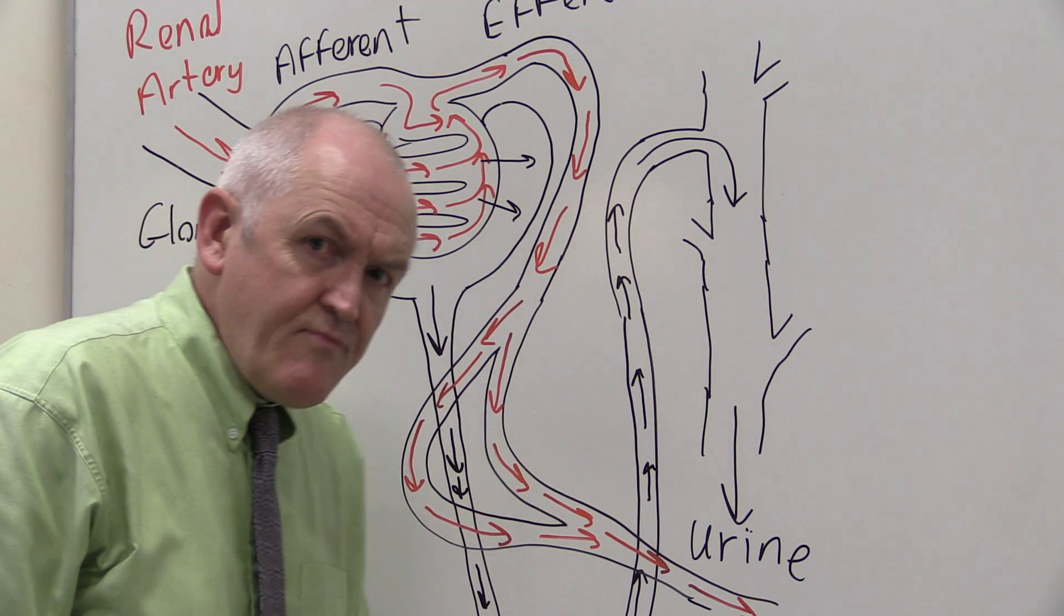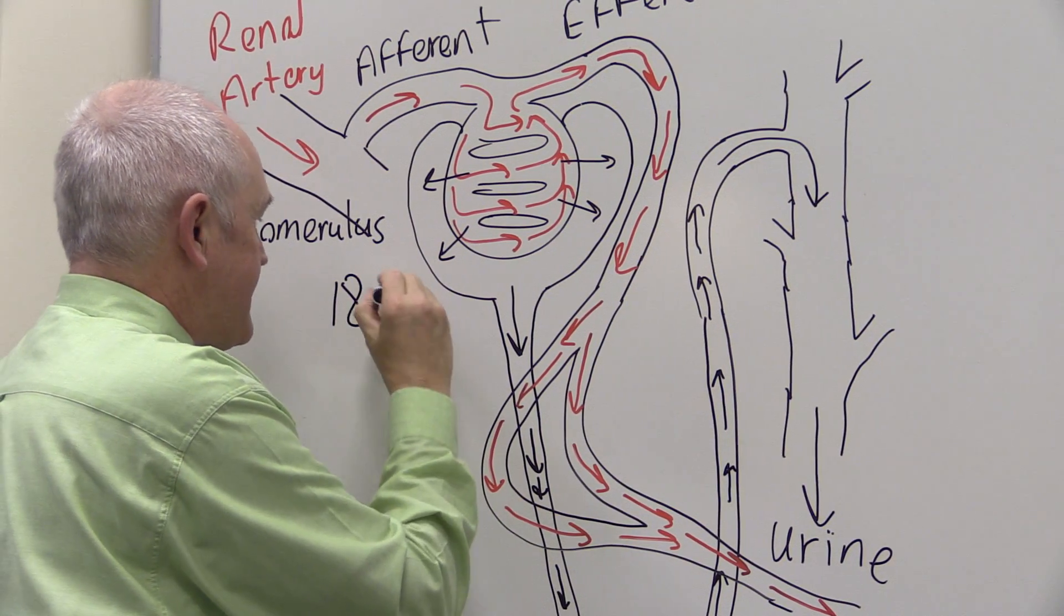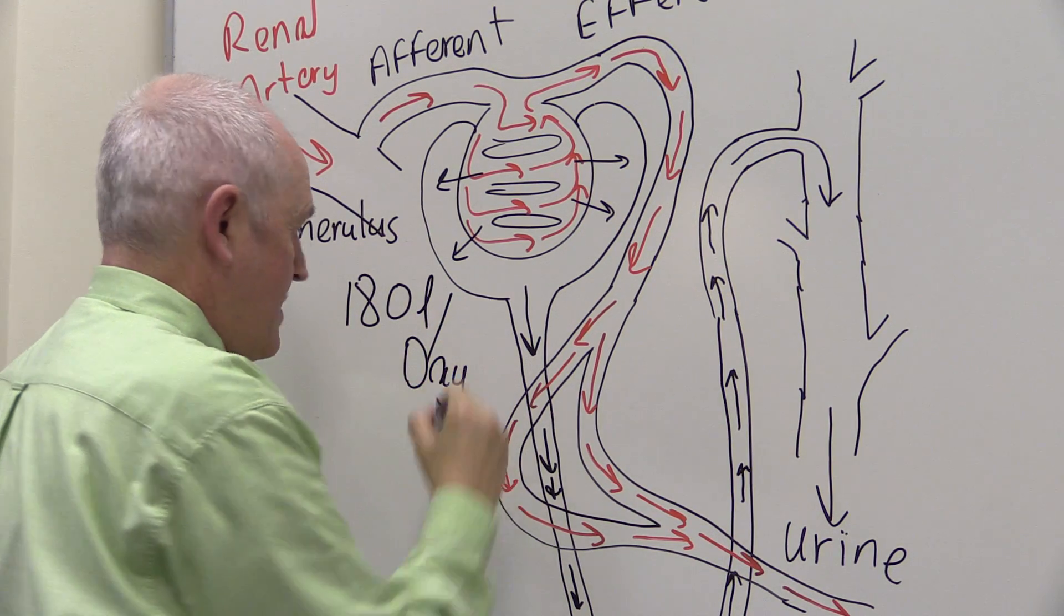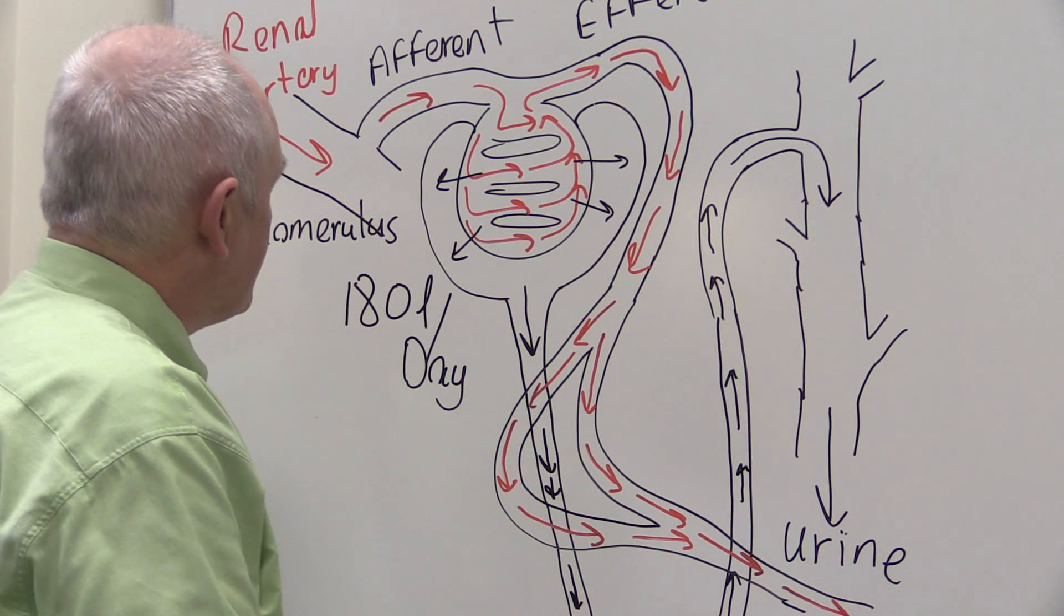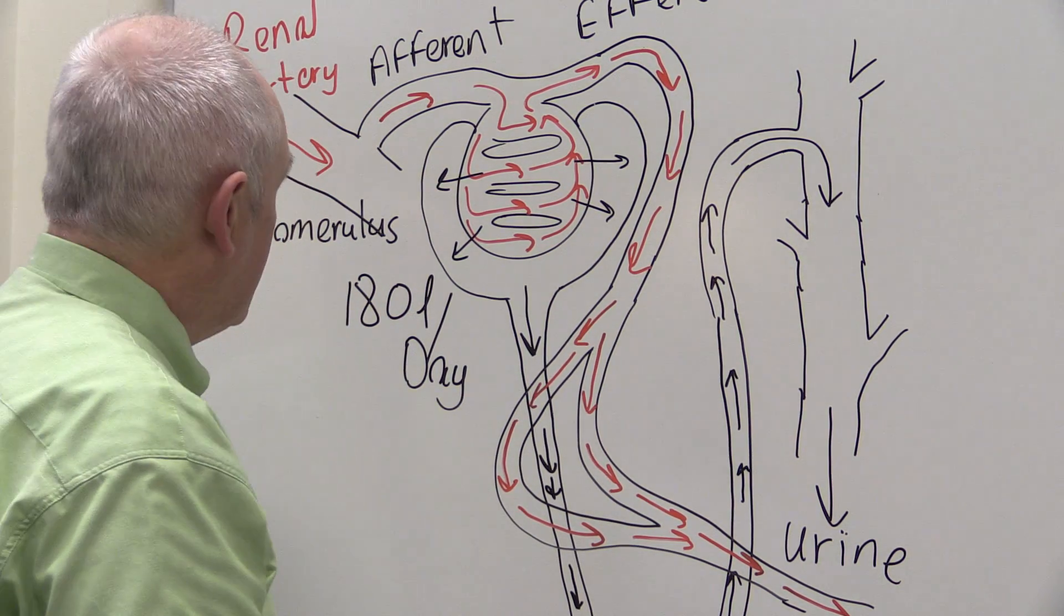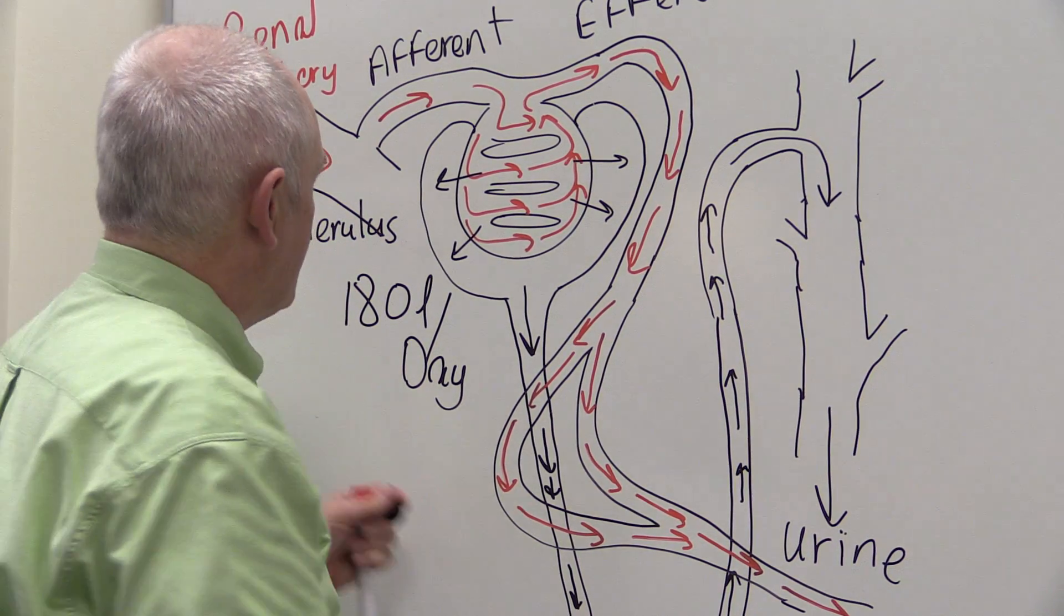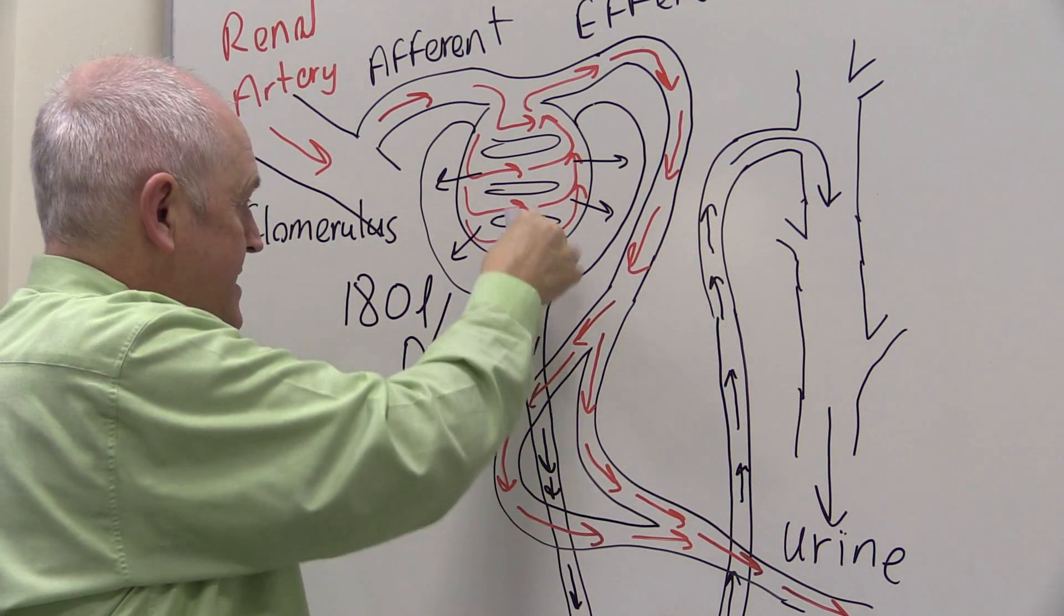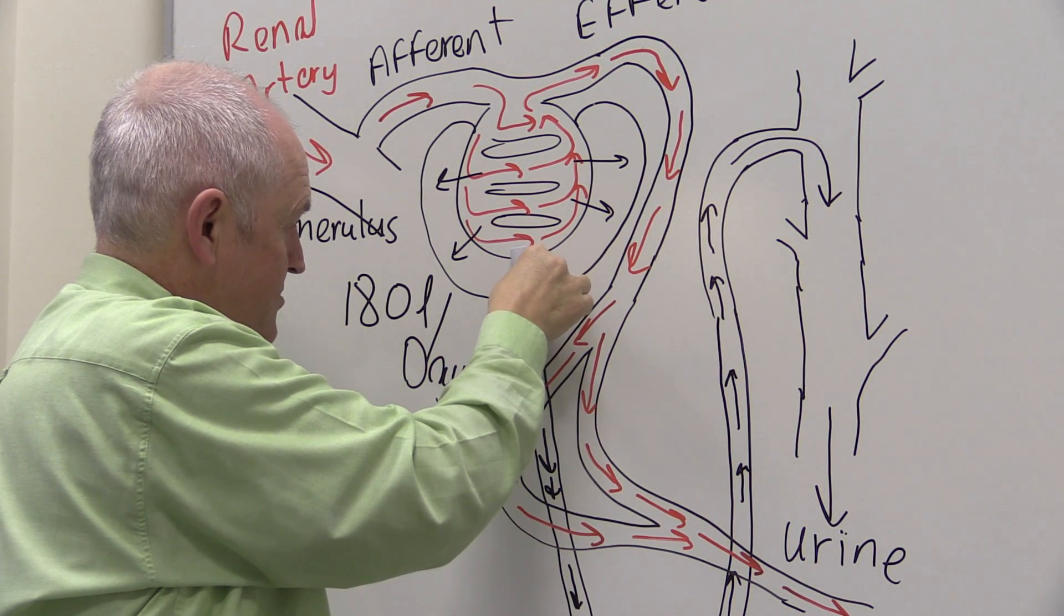Now, you probably know that every day in a young, fit adult, young fit man anyway, we're forming about 180 litres a day of glomerular filtrate. So every day, this process of ultrafiltration is filtering 180 litres of glomerular filtrate with the dissolved solutes into the glomerular space and 180 litres starts this journey down into the nephron. 180 litres a day.